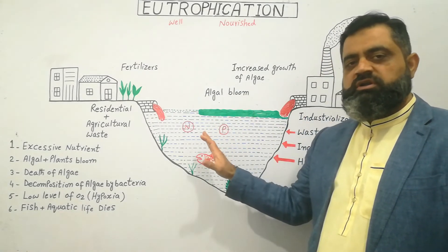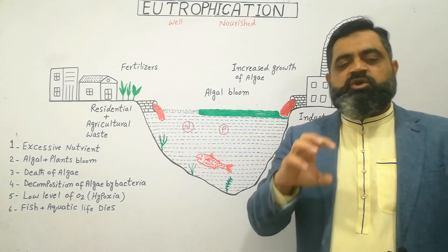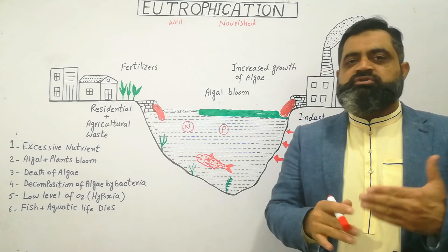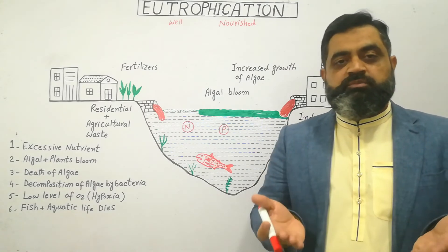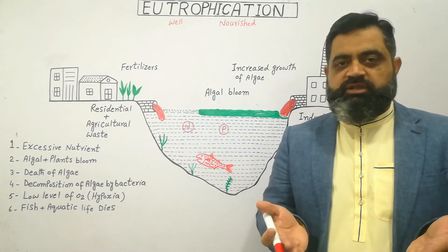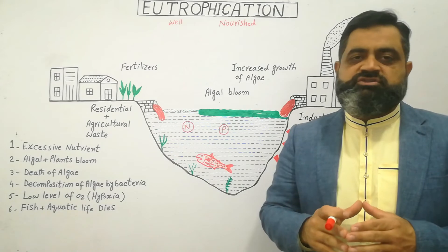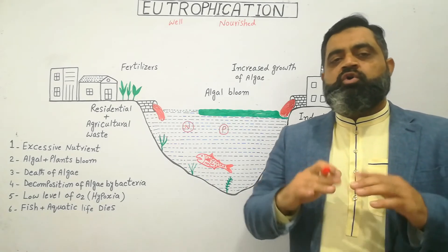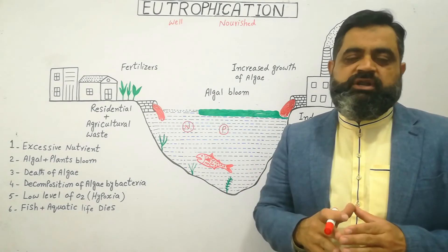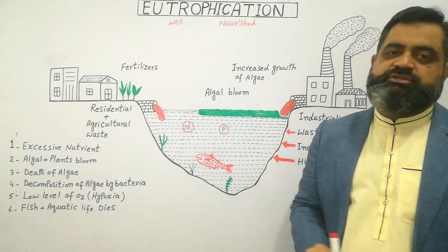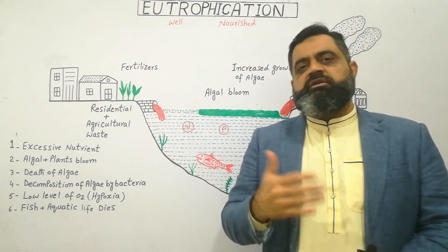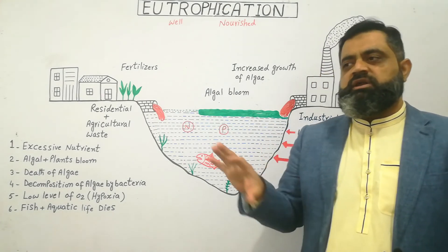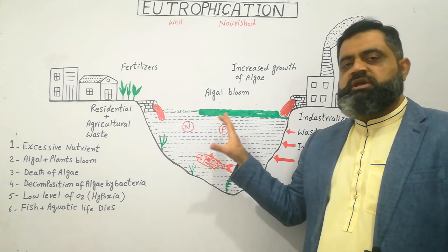When there is hypoxia in the water, aquatic animals start to die. Their bodies also begin to decompose with the help of bacteria, causing even more oxygen deficiency. In this way, the whole water body and ecosystem is destroyed — this phenomenon is known as eutrophication. After this process, all aquatic life, including animals and plants, has died.